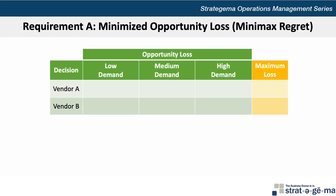Next, let's determine what the recommendation would be if we want to minimize the opportunity loss, which is simply the maximum loss that could be realized by choosing each vendor in comparison to the optimal selection. This is also known as the minimax regret criterion. If the company chooses vendor A and demand is low, it will incur a loss of $50 million because, if low demand was predictable, the payoff would have been $270 million. In essence, the firm regrets choosing vendor A instead of vendor B if the demand was low. If Southland selects vendor A and demand is medium, then no loss is incurred because the $300 million payoff is the same whether A or B is selected. If demand ends up being high and vendor A were selected, there is no loss because the company would choose vendor A if high demand were predictable. Thus, the maximum loss of choosing vendor A is $50 million.